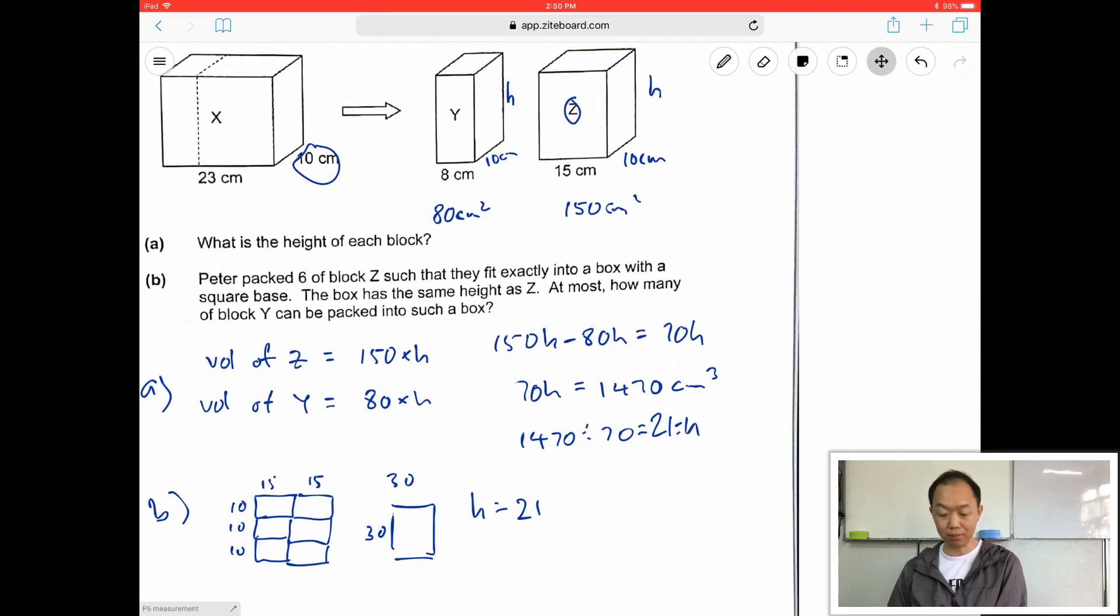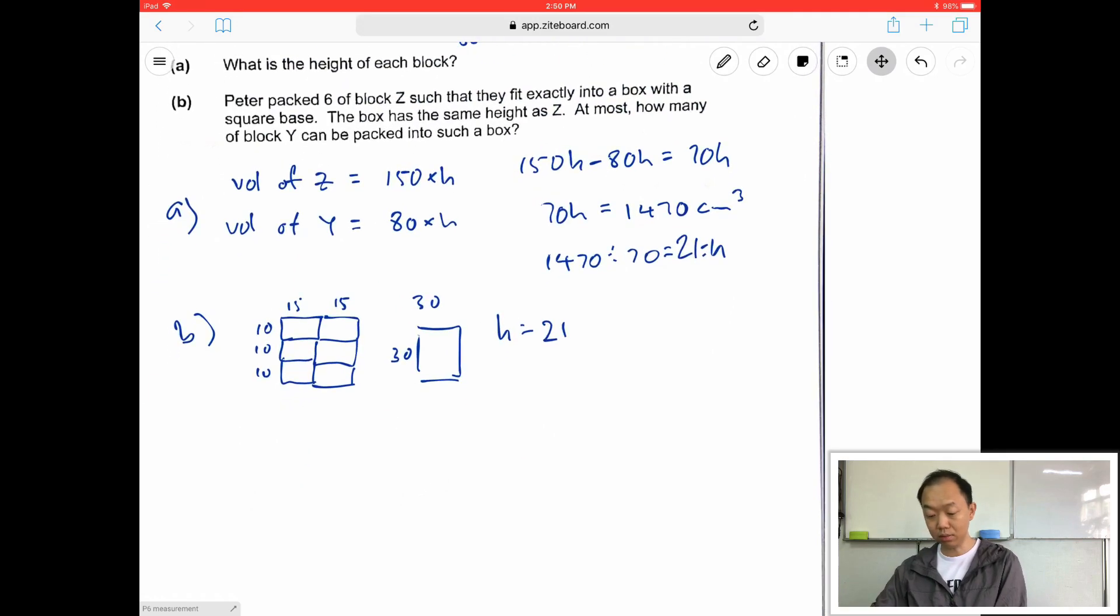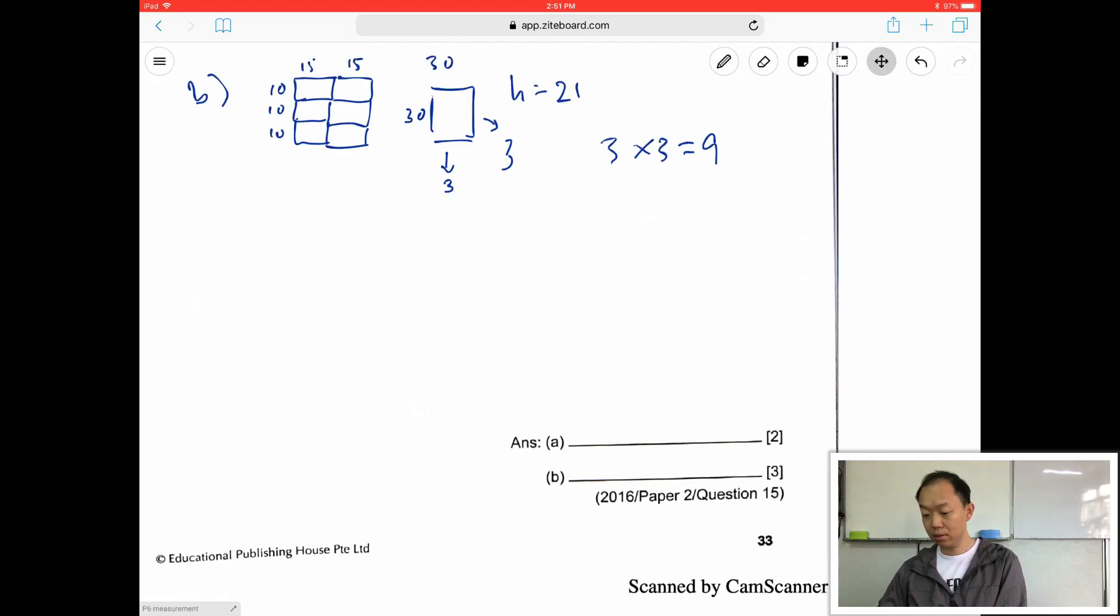So I can actually find how many of Y can be packed into such a box. Now Y is 8 by 10, so it is 8 along this part by 10. So I can put 3, and then here this side because it's 8 one side, 30 divided by 8 is 3. The height is the same, so it's 3 times 3 equals to 9. So we can pack 9. Next.